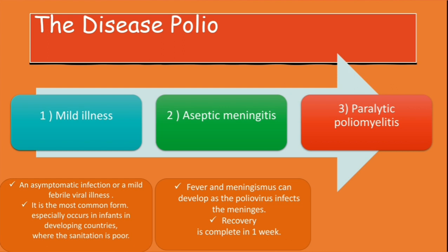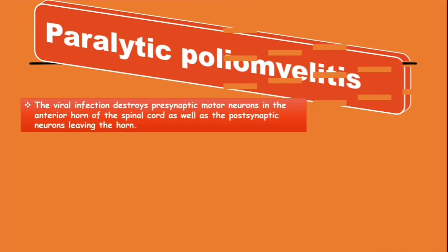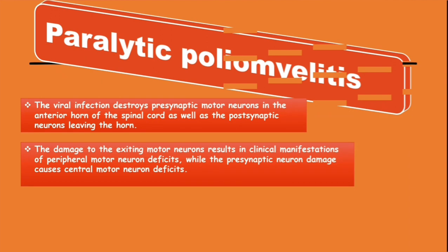Paralytic poliomyelitis is the most feared manifestation of poliovirus infection. The viral infection destroys the pre-synaptic motor neurons in the anterior horn of the spinal cord, as well as the post-synaptic neurons leaving the horn. Damage to the exiting motor neurons results in peripheral motor neuron deficits, while pre-synaptic neuron damage causes central motor neuron deficits.